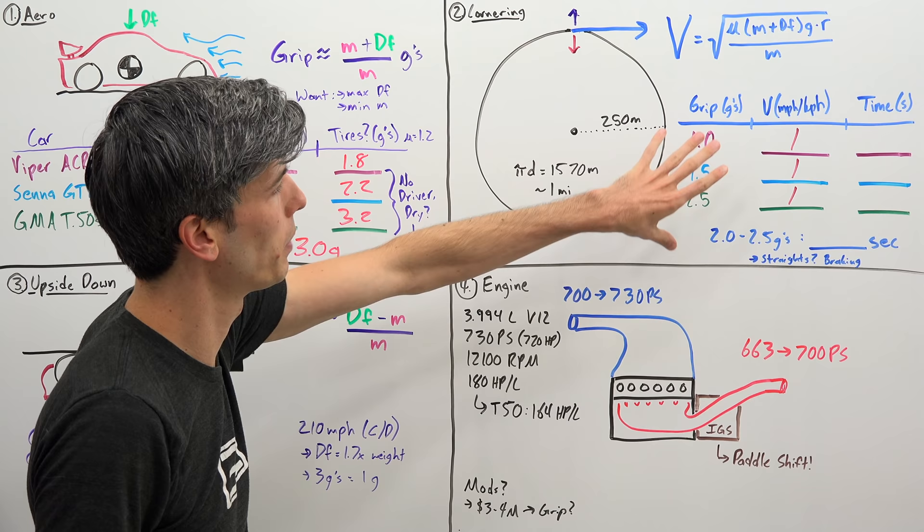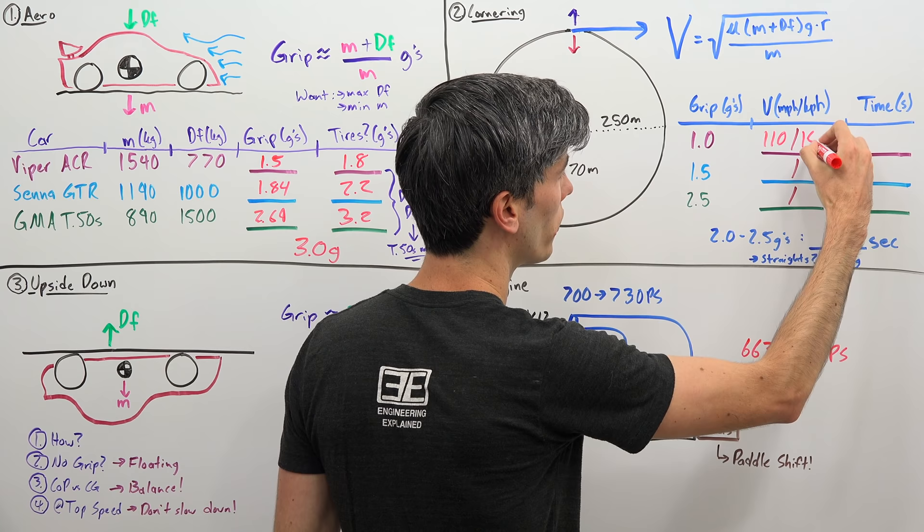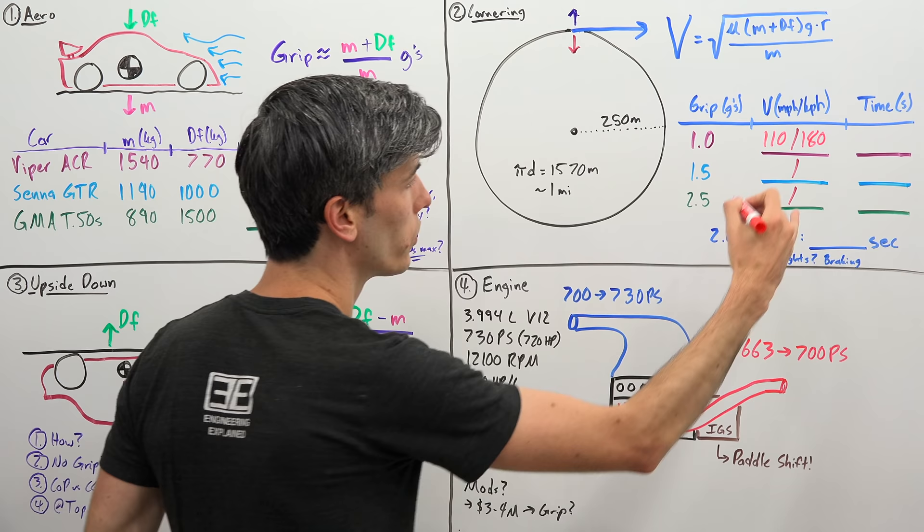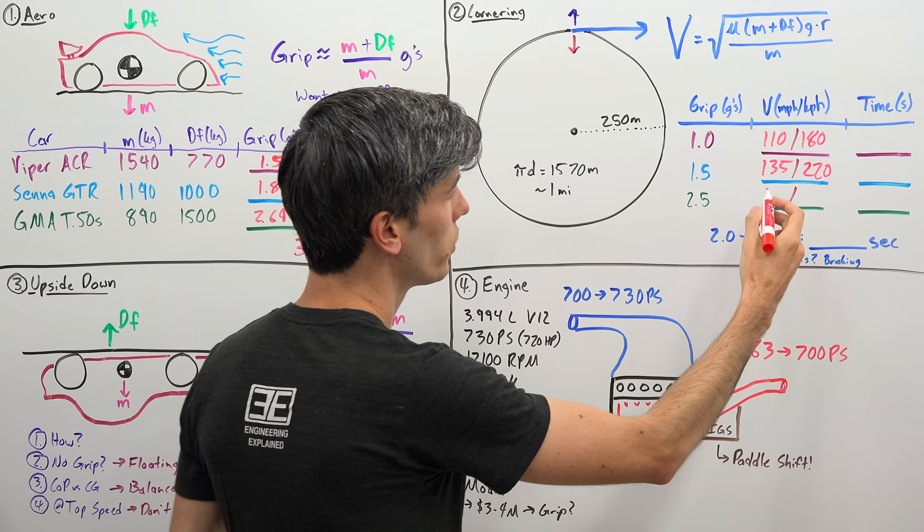We're looking at what kind of speeds can we actually go around this circle. If you had a car with 1 G of grip, that will be going around the circle at about 110 miles per hour or 180 kilometers per hour. If you had a car with 1.5 G's of grip, you're at 135 miles per hour or 220 kilometers per hour. And if you have this T50s with 2.5 G's of grip with downforce, 175 miles per hour or 280 kilometers per hour.